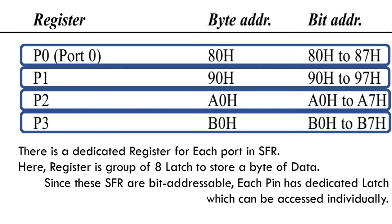For addressing: if I do a byte operation using address 80H, that will affect the full port. If I use a bit operation and give the same address 80H, that refers to port 0.0 specifically. So in byte operation, the byte address is affected; in bit operation, the bit address is affected.